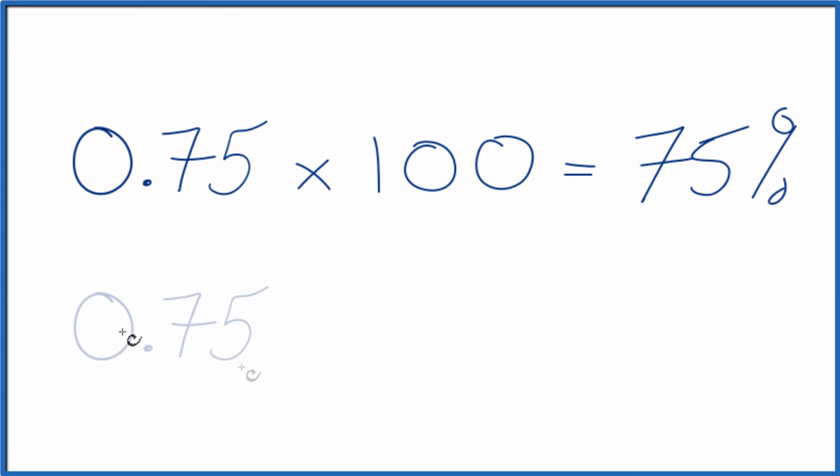Another way we can do it is like this. You can move the decimal point two places to the right. So let's do that. One, two, and that gives us 0.75, which is really just 75, and that is 75 percent, just like we found before.